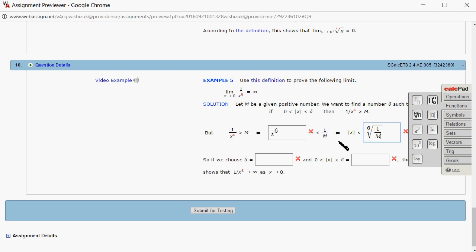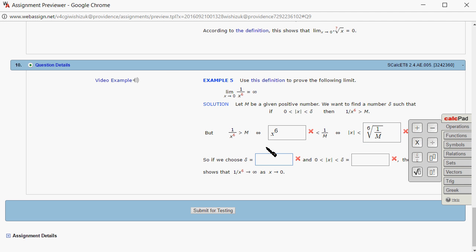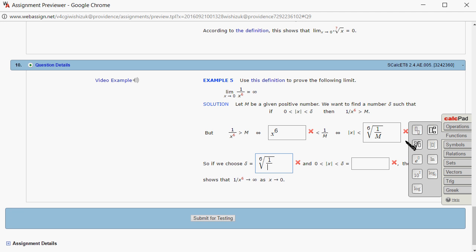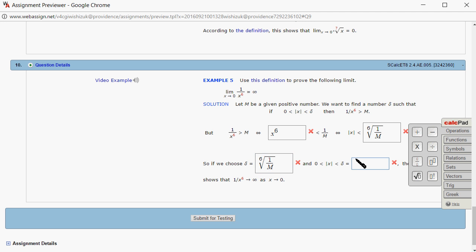Then we choose the 6th root of 1 over m to be our delta value. So if absolute value of x is less than delta, which is the 6th root of 1 over m...